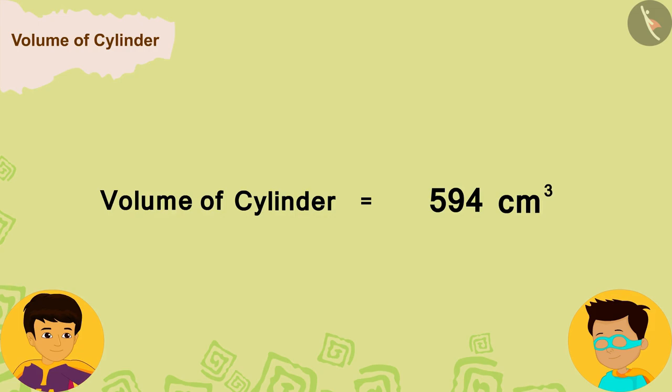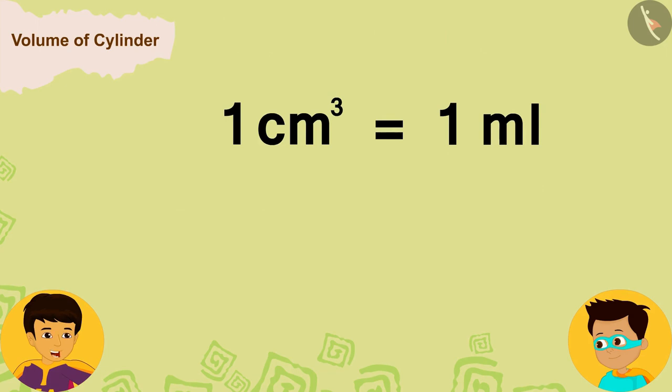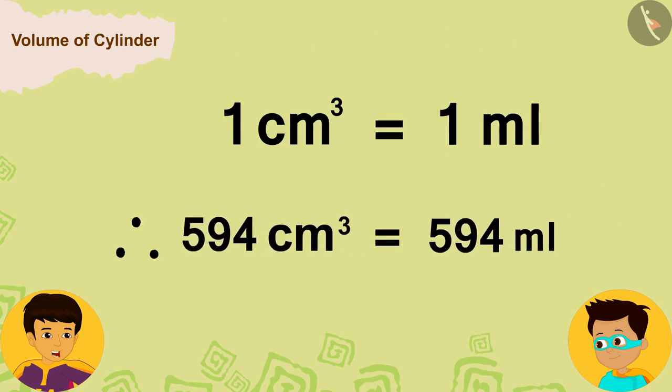By solving it in this way, we can see that the volume of the cylindrical bottle is 594 cubic centimeters.